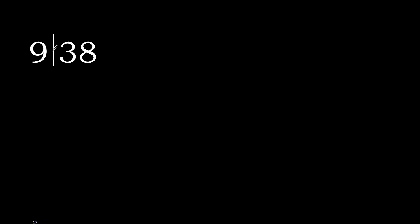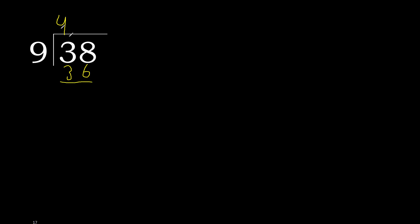38 divided by 9. 3 is less, therefore next 38. 38 is not less, therefore with 38. 9 multiplied by which number is nearest to 38 but not greater? 9 multiplied by 5 is greater. 9 multiplied by 4 is 36, which is not greater. 38 minus 36 is 2.